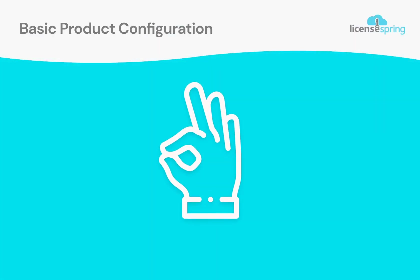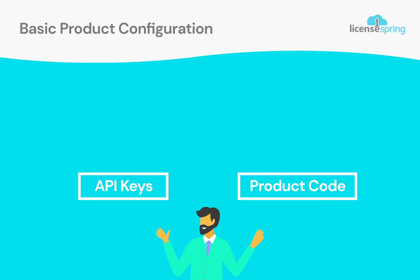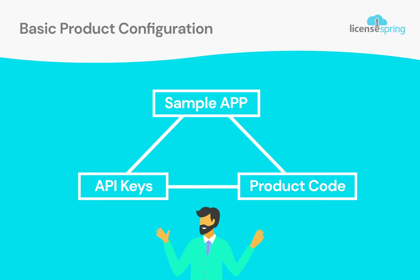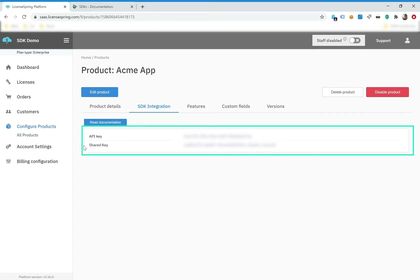You'll be able to use a series of function calls to achieve license activations, checks, ability to handle trials, and so on. At this stage, you should replace the API keys and product code in the sample app included in the target SDK with the ones in your account so that you can familiarize yourself with the available function calls. Your API keys are found under Account Settings, Settings, Keys.